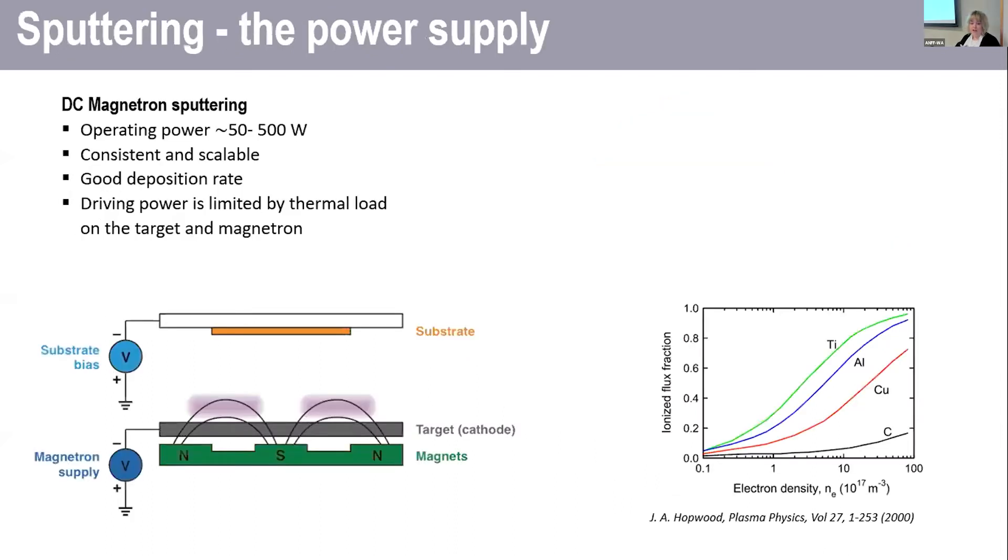So considering that the difference is just a power supply, if we think first about DC magnetron sputtering on the left, you see a typical schematic of a DC magnetron sputtering system. So you've got a cathode, which is some target material that you want to create a film out of. And below that are some permanent magnets.